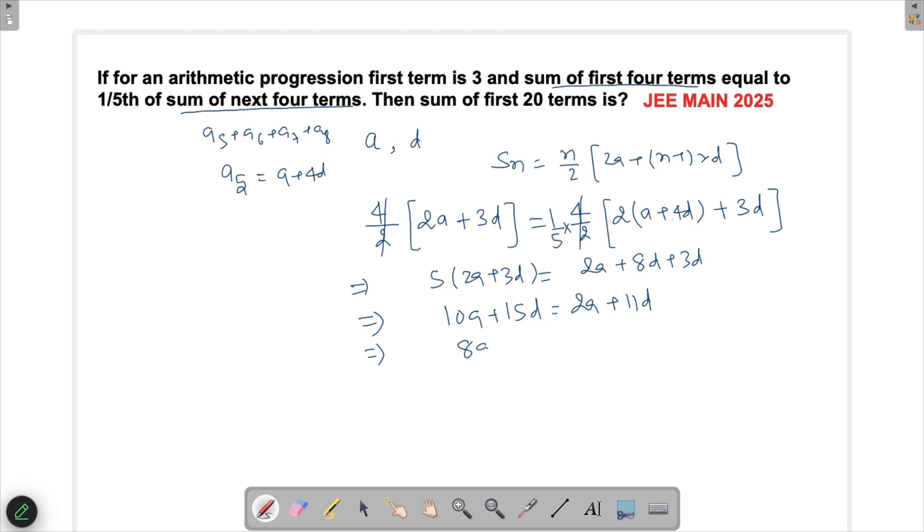Bringing 2a to the left side gives 8a = -4d, so d = -2a.